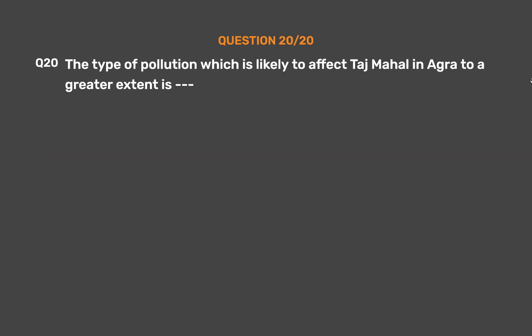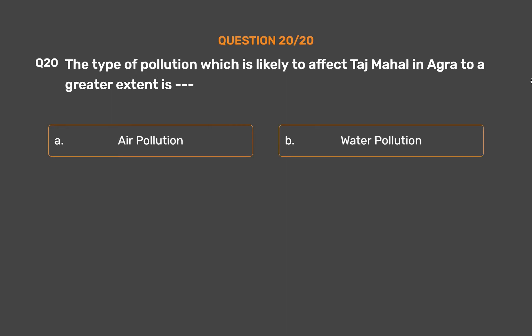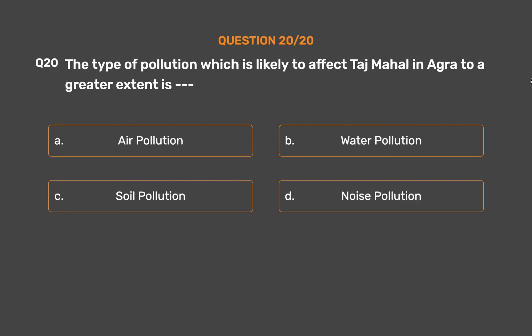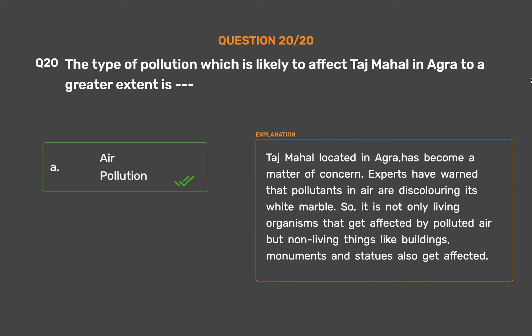Question number 20: The type of pollution which is likely to affect the Taj Mahal in Agra to a greater extent is — Option A: Air pollution. Option B: Water pollution. Option C: Soil pollution. Option D: Noise pollution. The correct answer is Option A: Air pollution. Taj Mahal, located in Agra, has become a matter of concern. Experts have warned that pollutants in the air are discoloring its white marble. So, it is not only living organisms that get affected by polluted air, but non-living things like buildings, monuments and statues also get affected.